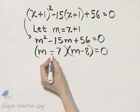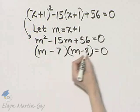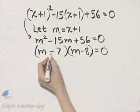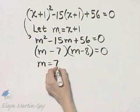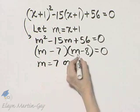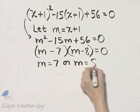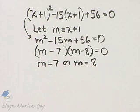Then remember, if we set each factor equal to 0, here m will equal 7, and here m will equal 8. Go ahead and write down that intermediate step.